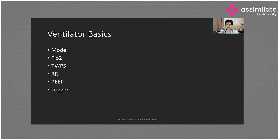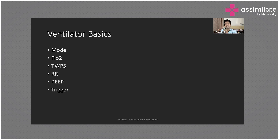In volume control mode, volume is the independent (fixed) variable and pressure is the variable — pressure can change. When you switch to pressure control ventilation, you set the pressure — the pressure in the endotracheal tube or airway system should not rise above the set value. The ventilator blows air at that fixed pressure and tidal volume becomes variable. If the lungs are normal, adequate tidal volume is generated; if there is bronchospasm or narrowing, pressure stays fixed but tidal volume will not be adequate.